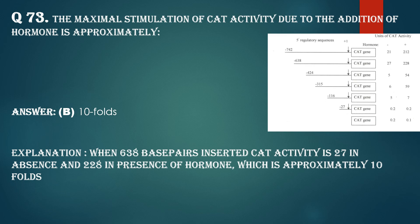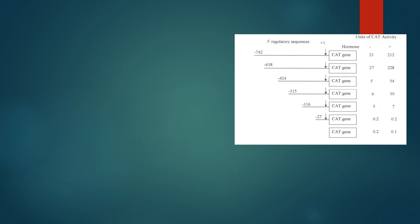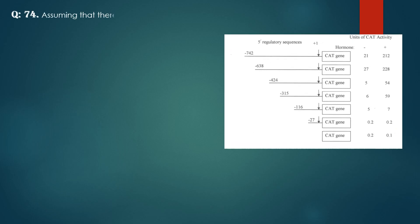Next question. Question number 74: Assuming that there is a single hormone responsive regulatory element in the gene, that element is located between. If we consider only one 5' regulatory sequence, only one responsive element is coded by these regulatory sequence. Then, where can it be located?